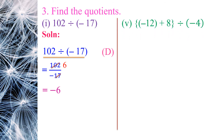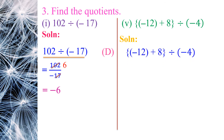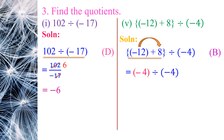Fifth sum: (−12 + 8) ÷ (−4). Solve inside the bracket first: −12 + 8 = −4. The expression becomes −4 ÷ (−4). Cancelling minus and minus, and also 4 and 4, we get 1 as the solution.